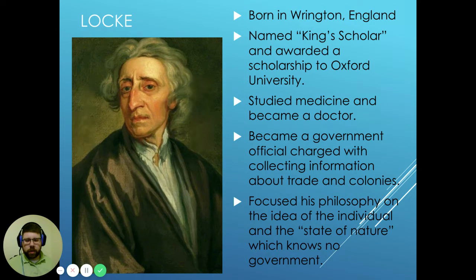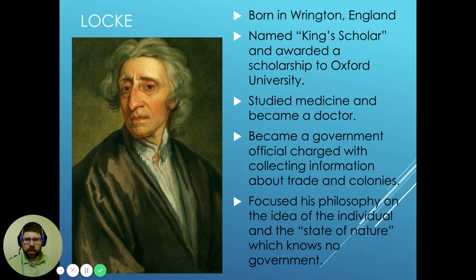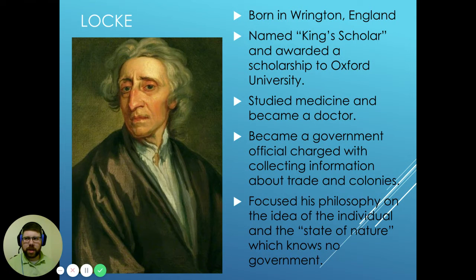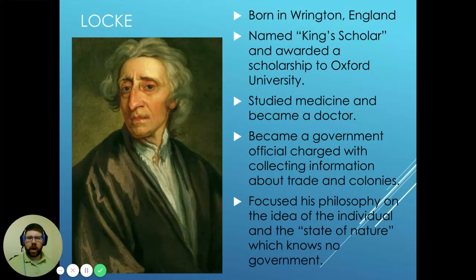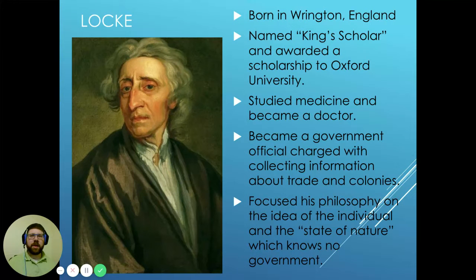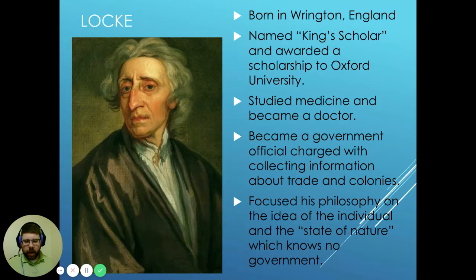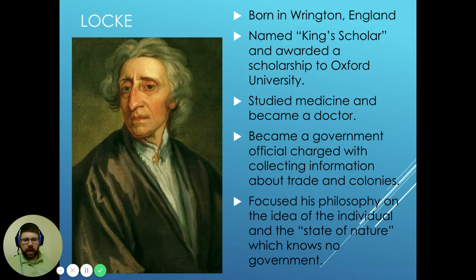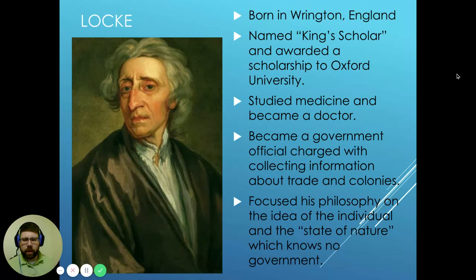Hobbes would argue that man's nature from the get-go is not to seek out order, but rather to seek out pleasure and safety. That's where the concept of the social contract comes in for Hobbes — he believes man will give up some of his freedom to achieve safety and give it to an authority figure. Locke also believes man has a state of nature that doesn't know government from the beginning.